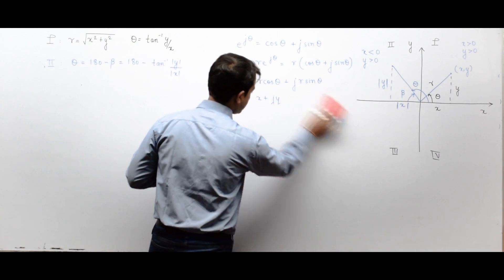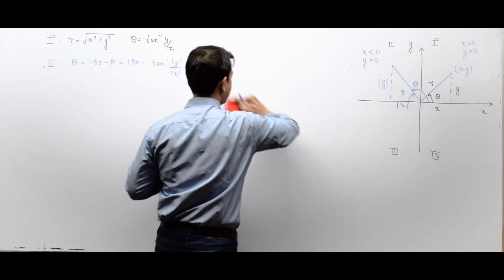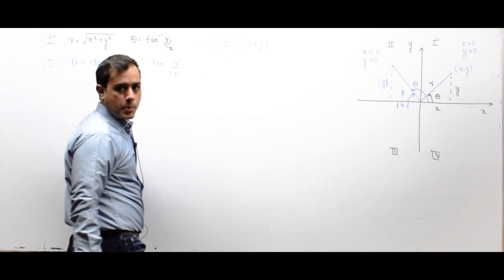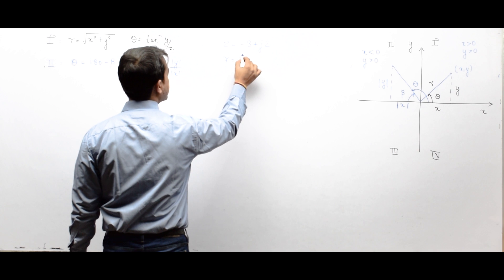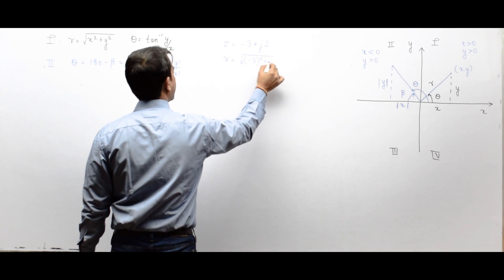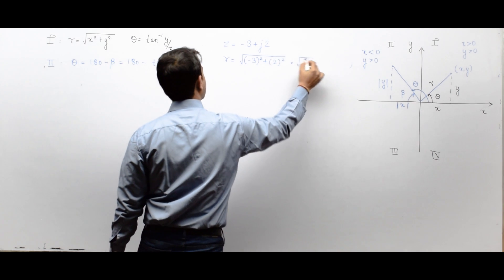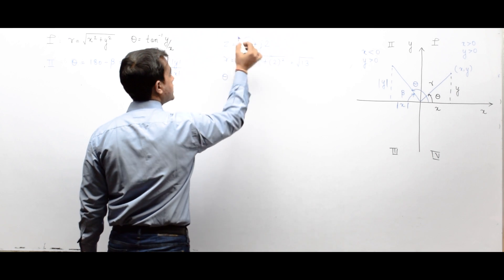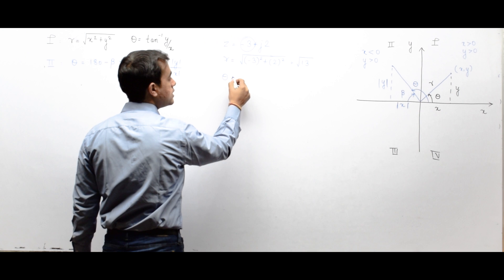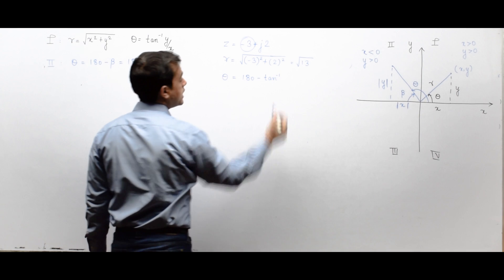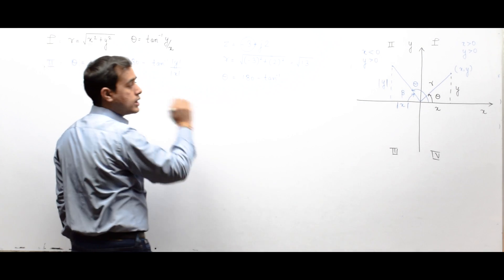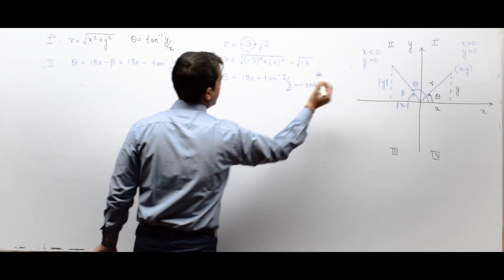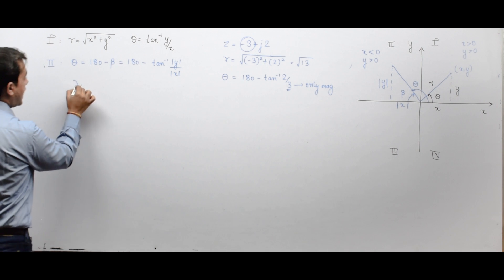For example, for the complex number −3 + j2: the magnitude r = √(x² + y²) = √13. Since the real part is negative and imaginary part is positive, it is in the second quadrant, so θ = 180° − tan⁻¹(2/3). In the tan inverse we only write the magnitude — not −3, just 3.